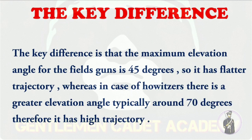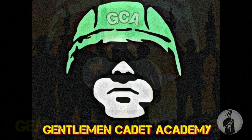The major difference between the field gun and the howitzer is the maximum elevation angle. The maximum elevation angle for a field gun is about 45 degrees, giving it a flatter trajectory. In the case of a howitzer, the angle is more than 45 degrees — typically around 70 degrees — giving it a higher trajectory. In the mountains, a higher angle is needed to cross the crest of the mountain, so howitzers are the higher angle guns and field guns are the lower angle guns.